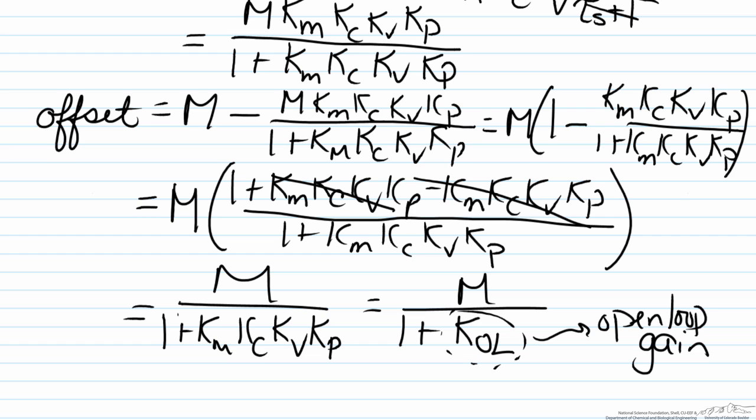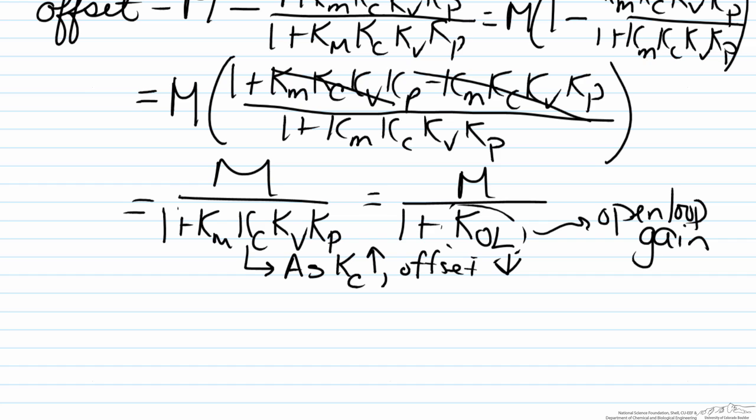So here what we are showing is that P only control, although it helps with the speed of a process response and is a little less susceptible to stability issues than other control schemes, a major issue with P only control is that you will always have an offset in terms of where your process will operate. So it will not operate at your new set point M, it will be off by M over one plus the open loop gain. And as you can see here by looking inside this is as Kc the controller gain goes up, the offset goes down. But there is also a trade off with that because as Kc goes up stability problems increase. So the chance that we are having an issue with stability also increases. So there is a give and take there.